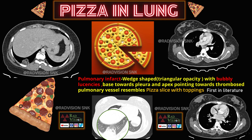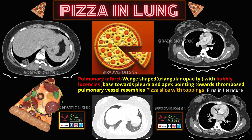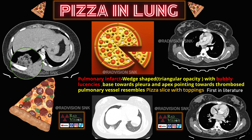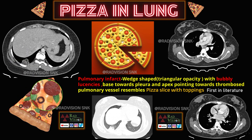On the lung window, the wedge-shaped opacity shows multiple bubbly or cystic lucencies within it, with the base pointing towards the pleura and apex pointing towards the thrombosed pulmonary vessel — findings consistent with pulmonary infarct. Common differentials are collapse and consolidation. This appearance closely mimics a pizza slice, so I have named it the 'Pizza in Lung' or 'Pizza Slice in Lung' appearance — first in literature. Remember: pizza in lung appearance for pulmonary infarct secondary to pulmonary thromboembolism.